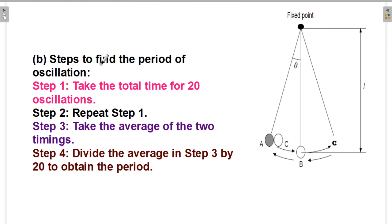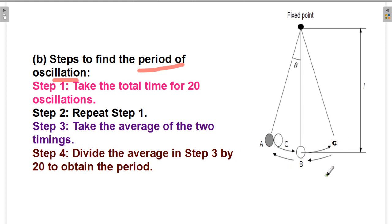Here are the steps to find the period of oscillation. Step 1: Take the total time for 20 oscillations — that is, A to B to C and back to A, repeated 20 times. Step 2: Repeat step one again for another 20 oscillations and record that time.